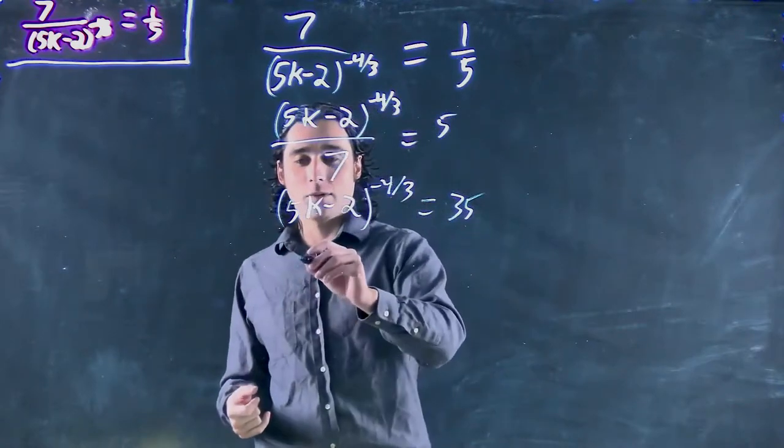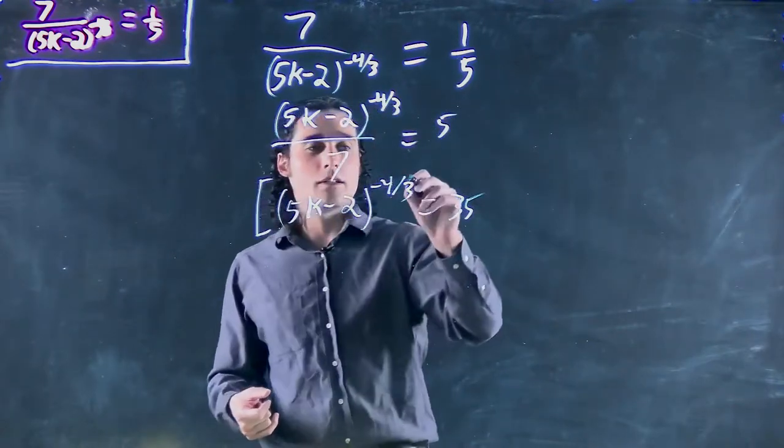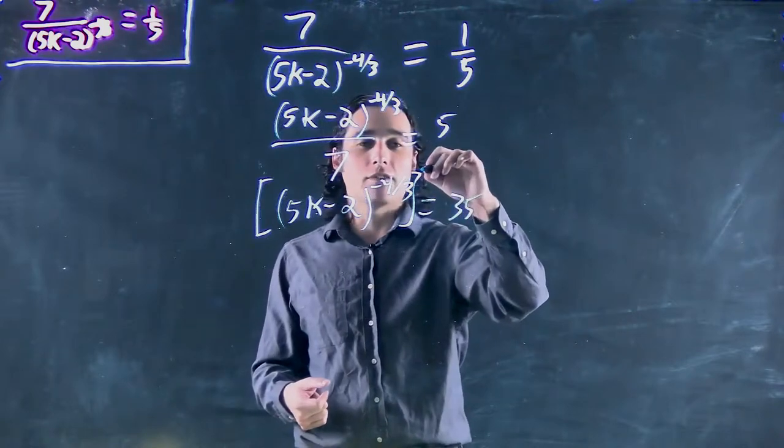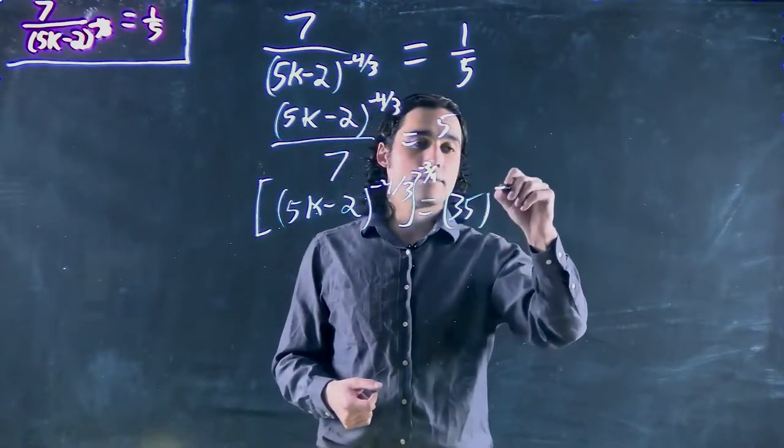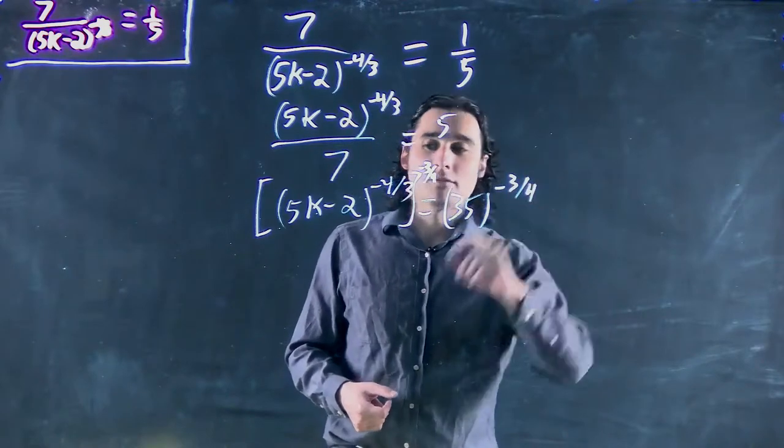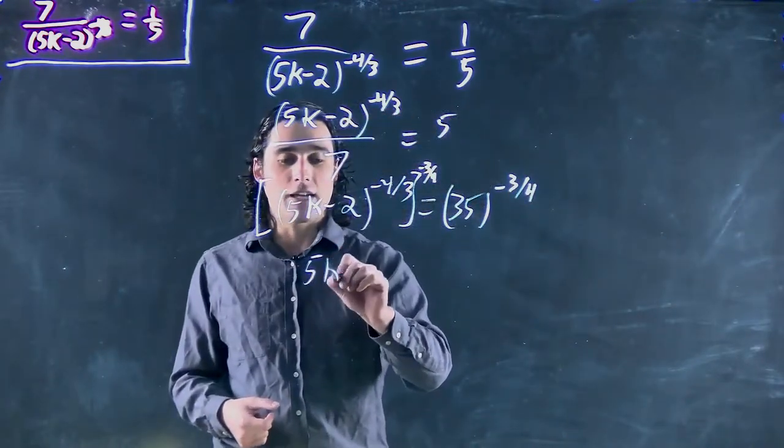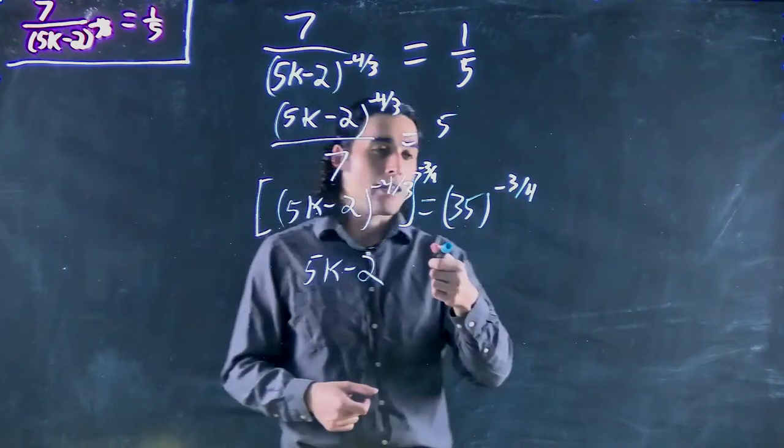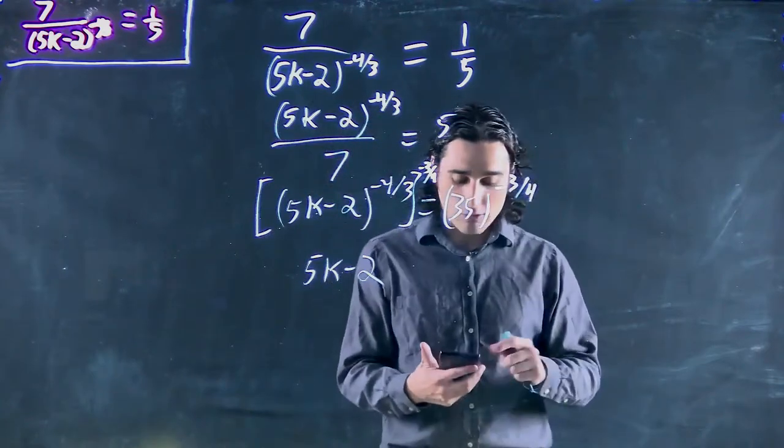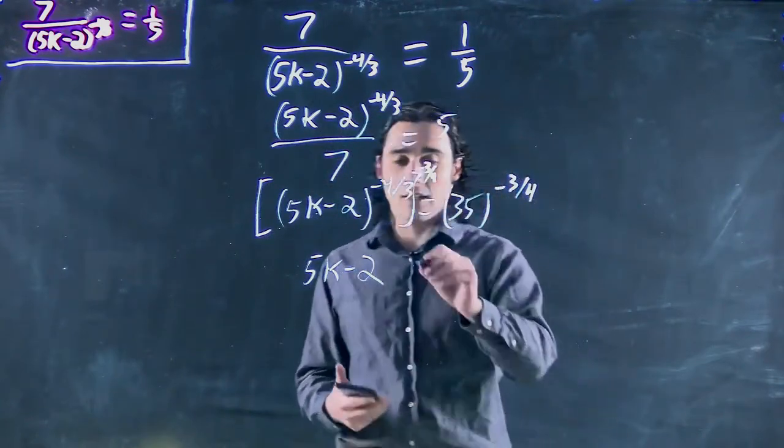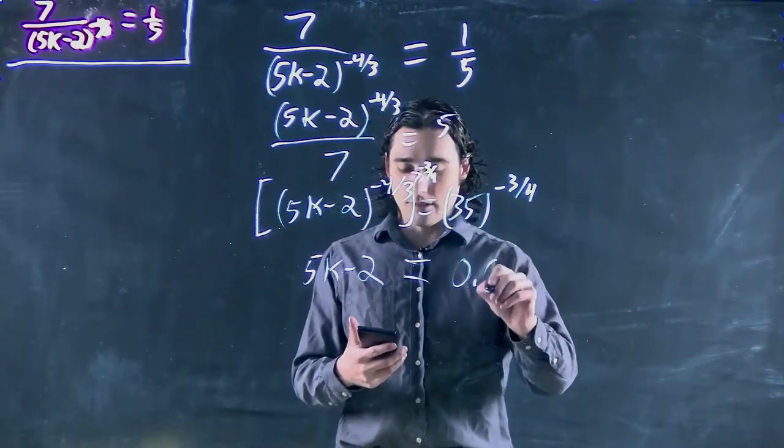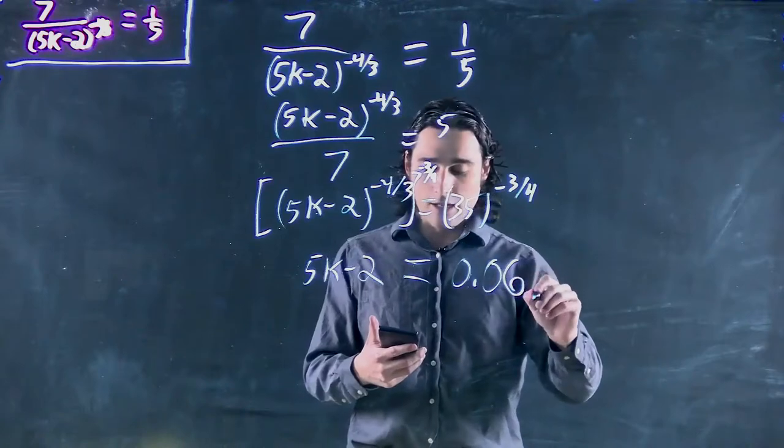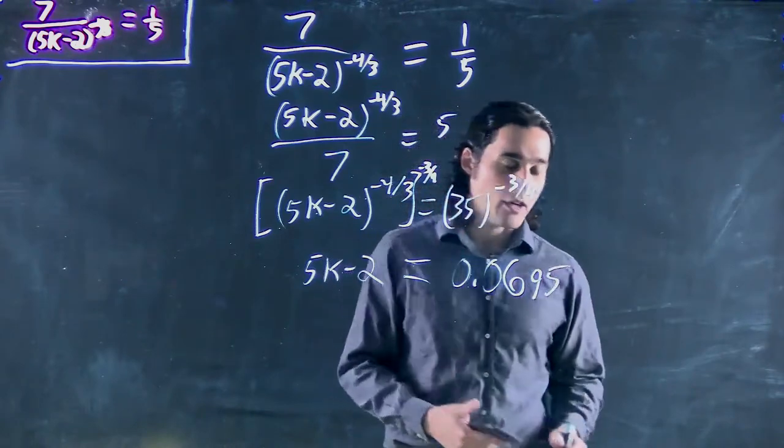Okay, great. Put both sides to the power of the inverse, which is negative 3 over 4. So we have 5k minus 2 equals 35 to the minus 3 over 4, which our calculator tells us equals 0.0695 to round off.